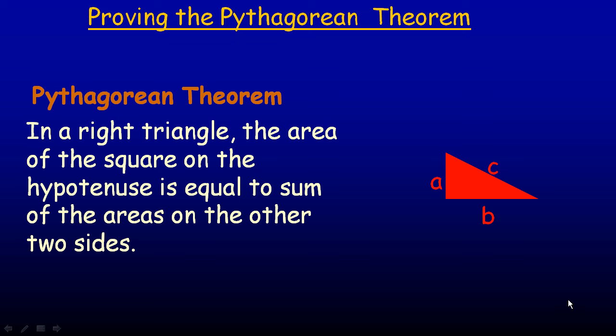In this tutorial we'll take a look at a proof of the Pythagorean Theorem. First of all, let's state what the Pythagorean Theorem is. If we have a right triangle, we'll call the two legs A and B — the shorter sides — and C the hypotenuse.